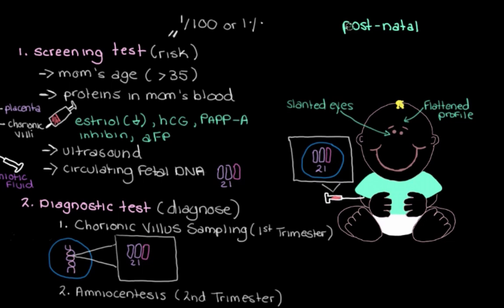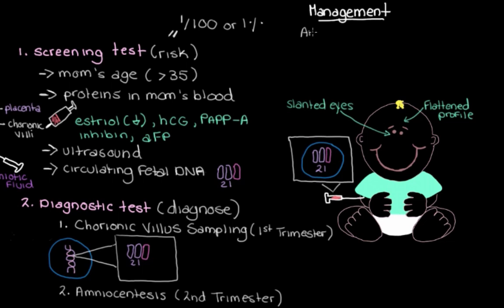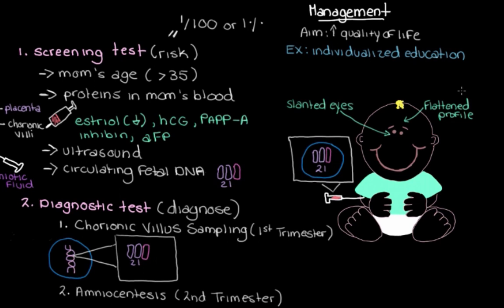Down syndrome is something a person will have their whole life. We don't have treatments or medications to cure or treat the intellectual disability and physical characteristics of Down syndrome. The aim of management is to maximize quality of life and independence — for example, through an individualized school program with more one-on-one time with teachers or a program that allows the person to go at their own pace.